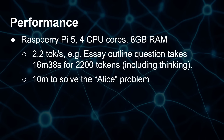On a Raspberry Pi 5 with four CPU cores, 8 gigabytes of RAM, and an NVMe drive, you get about 2.2 tokens per second — not very fast, but it does run. An essay outline on the Battle of the Bulge takes about 16 minutes with around 2,200 tokens of output. The Alice question takes about 10 minutes, but it does give the right answer.